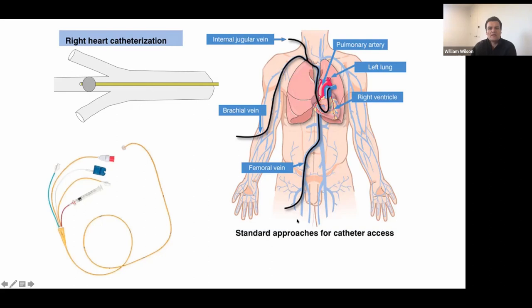What you find with an interrupted IVC is as your catheter comes up to the heart, instead of going into the right atrium, it'll often deviate off to the left, because there's usually a persisting left SVC. It'll either go down the left SVC to the coronary sinus, or it'll float around the innominate into the RA that way. It's called interrupted because there's no IVC connection into the RA — the hepatic veins flow into the RA, but the IVC joins essentially with the azygos and then loops around.